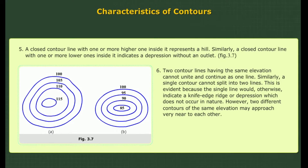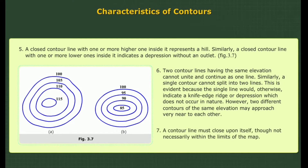6. Two contour lines having the same elevation cannot unite and continue as one line. Similarly, a single contour line cannot split into two lines. This is evident because the single line would otherwise indicate a knife-edge ridge or depression, which does not occur in nature. However, two different contours at the same elevation may approach very near to each other.